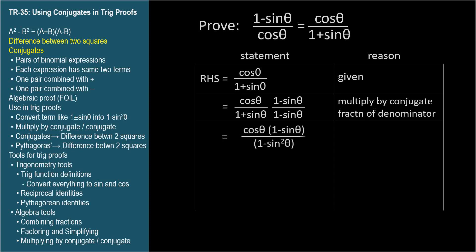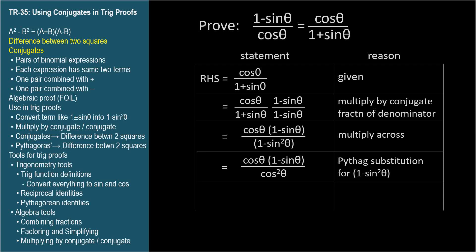Simplifying the denominator yields 1 minus sine squared theta, the difference between two squares, which in turn we can replace with cosine squared theta by the Pythagorean identity. Cancelling a cosine theta from numerator and denominator yields the left-hand side.